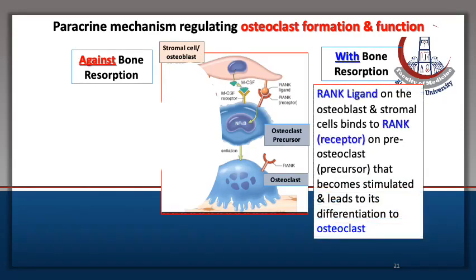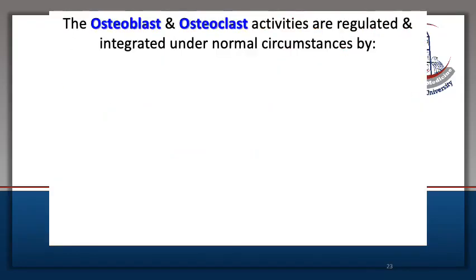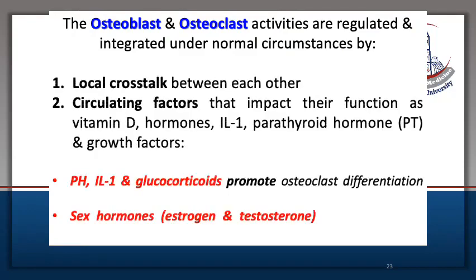The cross-talk between both cells is done via two factors. The osteoblast has RANK ligand that stimulates the differentiation of osteoclasts and produces bone resorption. At the same time, osteoblasts secrete osteoprotegerin, which blocks RANK ligand and prevents osteoclast differentiation, thus preventing bone resorption. Osteoblasts and osteoclasts are also regulated by circulating factors including vitamin D, parathyroid hormone, and growth factors.